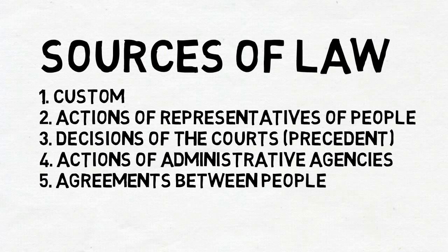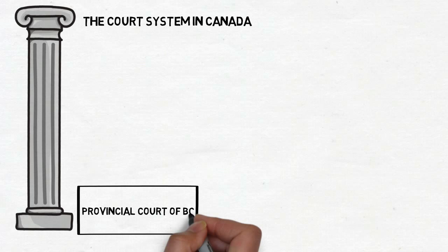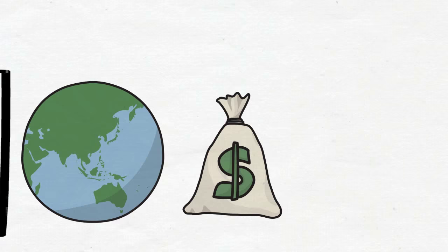We'll be looking at the court system in Canada, and specifically in B.C. First of all, we have the Provincial Court of B.C. This is an evidentiary court with usually only one judge and no jury. There are two limiting factors: first, you have to register in the area where the offense occurred, and second, you're limited monetarily to a maximum of $25,000 in damages.